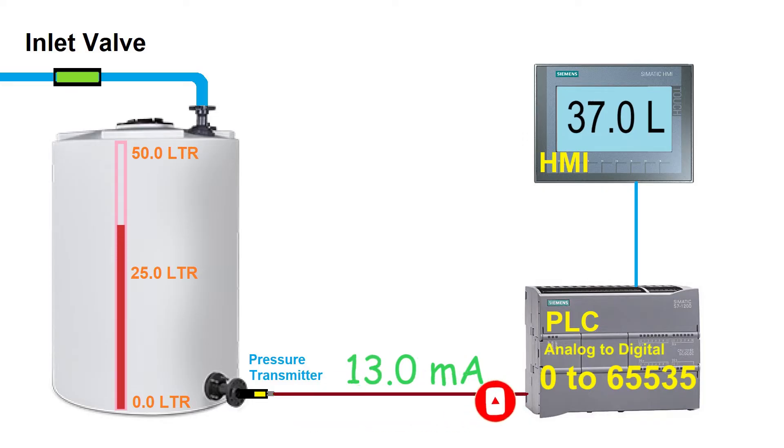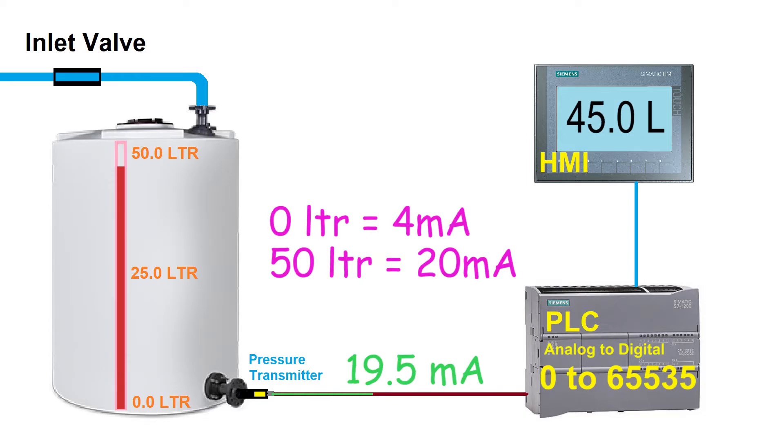As we start filling, the water level starts to go up and the level transmitter outputs 4 to 20 milliamps current signal to the PLC analog input. At 0 liters output current will be 4 milliamps and at 50 liters output current will be 20 milliamps.